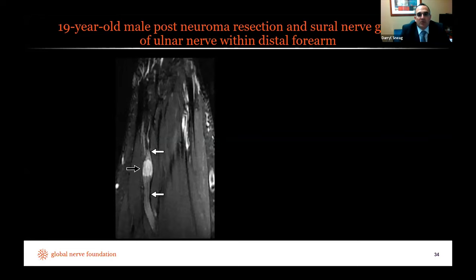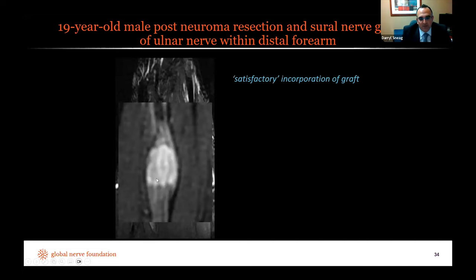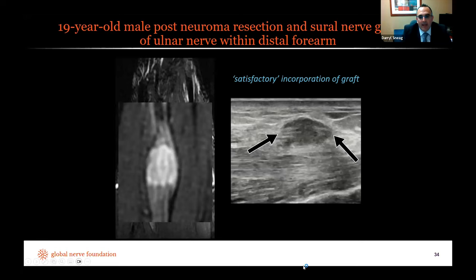A 19-year-old man post-neuroma resection and sural nerve grafting illustrates the challenge of assessing the post-operative nerve. I look for fascicular architecture and continuity — the surgical site is very bright relative to native nerve, but fascicular bundles are appreciated coursing through. On ultrasound, nerve bundles appear to be approximating — thought to represent satisfactory graft incorporation. This is still a poorly understood area: what are the expected and unexpected post-operative appearances of the nerve on MRI and ultrasound?